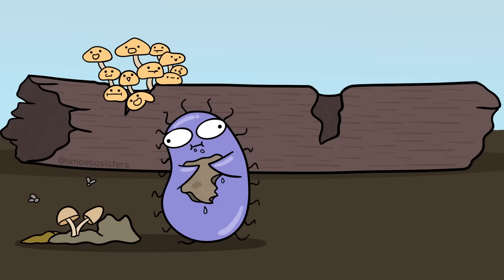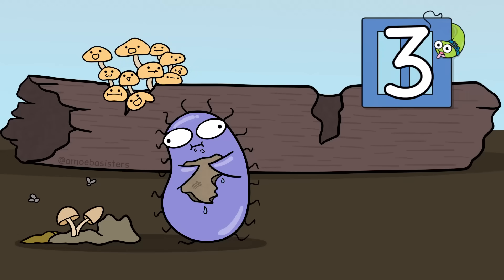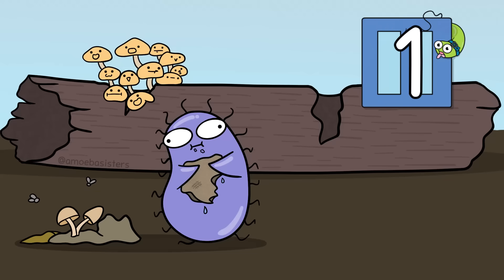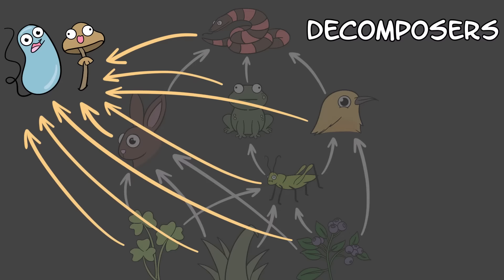This food web is missing some important organisms that break down organic matter — decomposers. If we drew in some popular decomposers, bacteria and fungi for example, all the arrows would eventually point to them.